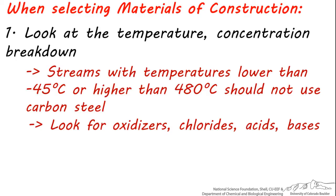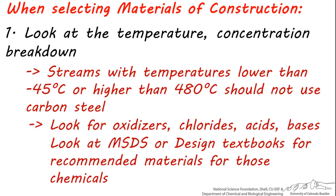Next, look for oxidizers, chlorides, acids, or bases in the stream going through the piece of equipment. If you see these or any other potentially corrosive or reactive chemicals at significant concentration levels, look in a design book or on a material safety data sheet to see which materials are recommended. Peters, Timmerhaus, and West, and other design books have chemical and material compatibility charts for many common chemicals. If you cannot find an exact chemical listed in a compatibility table, look for a chemical that's similar to it.